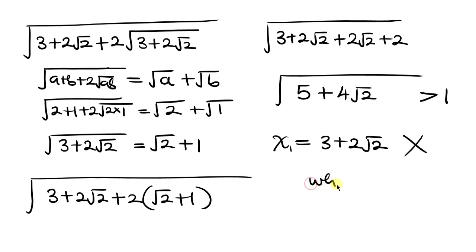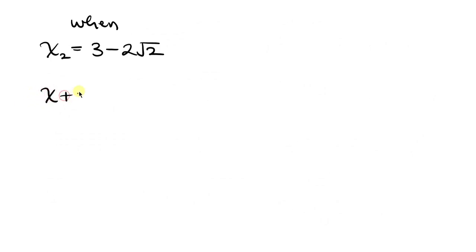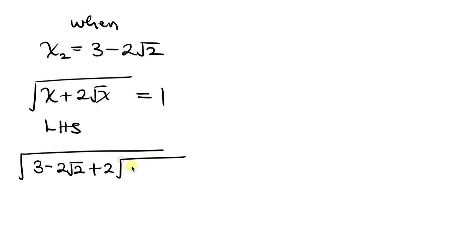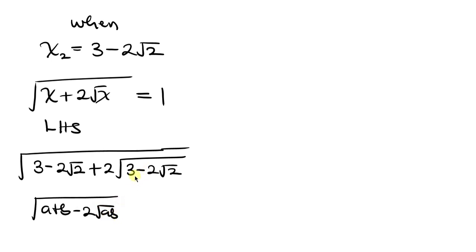Now let's check our second solution: x equals 3 minus 2 root 2. The given question is the square root of x plus 2 root x equals 1, and we take the left hand side, substituting x equals 3 minus 2 root 2. We apply the property: the square root of a minus 2 root ab equals the square root of a minus the square root of b. The difference from before is just the sign.